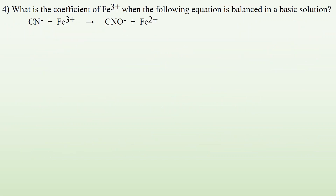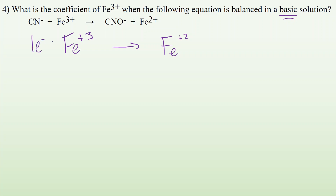Number four: what is the coefficient for Fe³⁺ when the following equation is balanced in a basic solution? We're going to have an additional step since it's a basic solution, but we start the same way — split into two half-reactions. Starting with Fe³⁺ → Fe²⁺: balance non-oxygen/hydrogen atoms, done; balance oxygens, done; balance hydrogens, done. Balance charges: add one electron to the left so both sides are plus two.